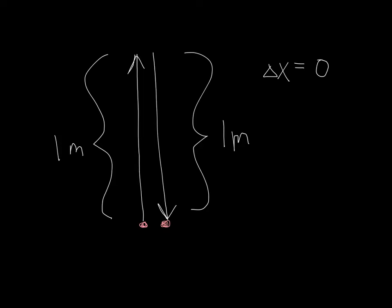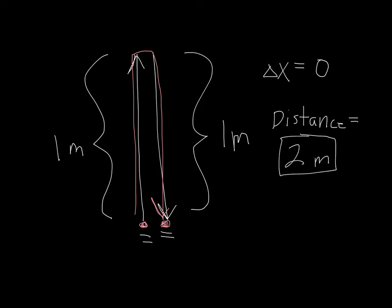However, the distance that it went doesn't care about where you started, doesn't care about where you ended. It cares about everything that happened in between. It cares about this distance up of one meter plus this distance back down of another meter. So my distance is actually going to be the addition of those two meters, of those one meter paths. So my distance is going to be two meters. So that is the difference between displacement and distance. The displacement cares about your final and initial positions. The distance does not. It cares about how far you actually went.